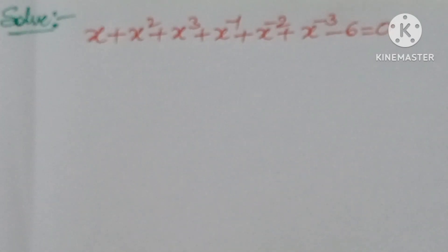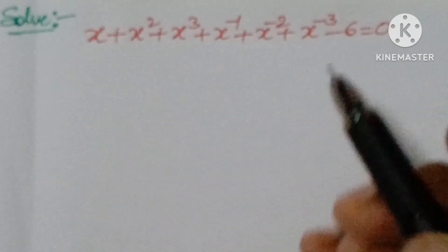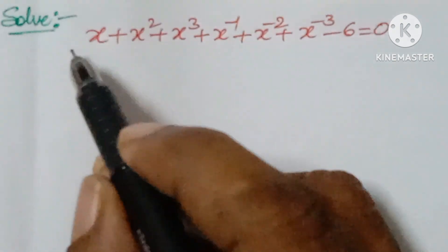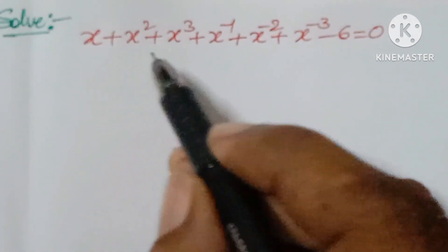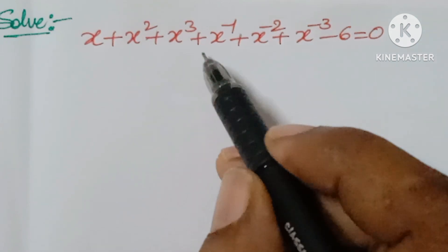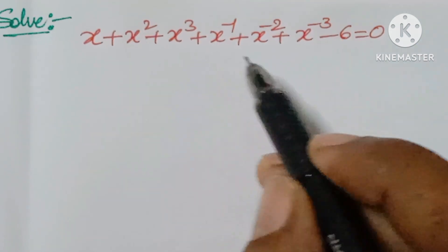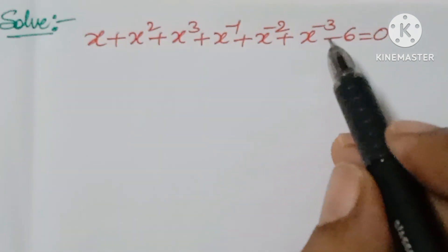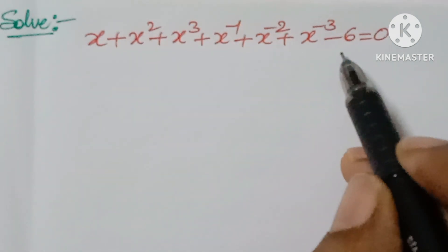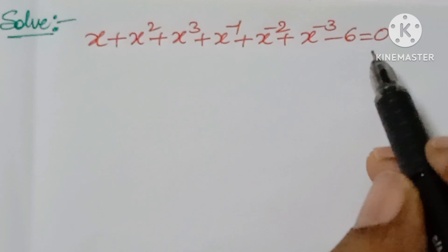Hello, welcome back to IAM CG Max. Today we are looking at a polynomial problem. The question is: solve x plus x squared plus x cubed plus x to the power of minus 1 plus x to the power of minus 2 plus x to the power of minus 3 minus 6 equal to 0.